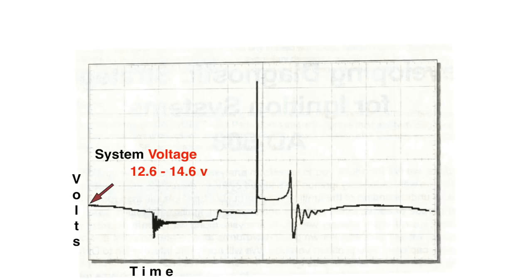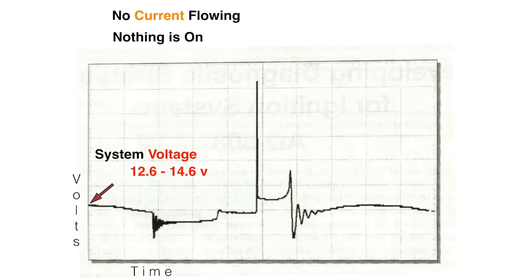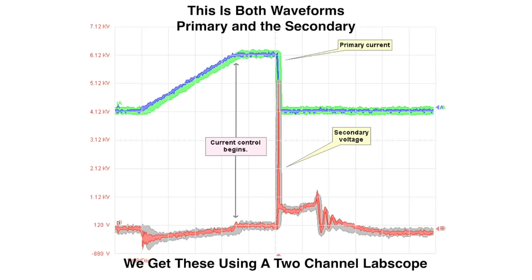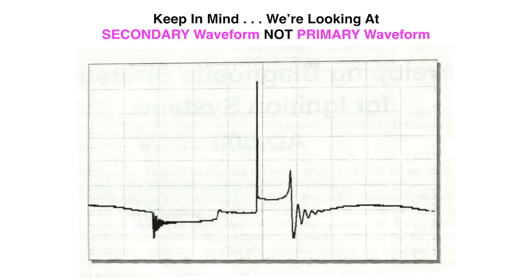No current is flowing. Nothing is on. We just have static system voltage, so we have not dropped any voltage. Remember voltage drop testing? We have to have something on. Keep in mind we're looking at a secondary waveform, not the primary.